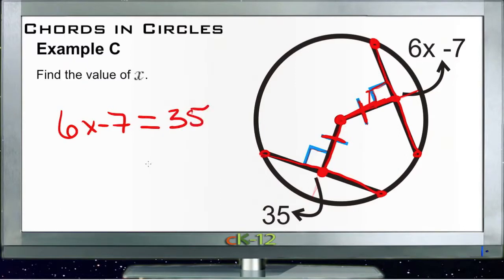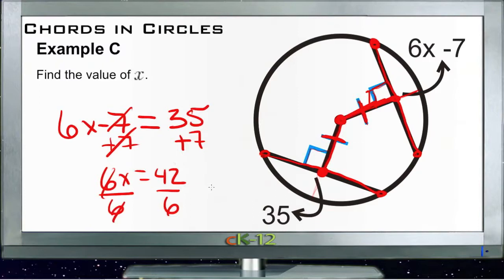Then we just need to solve for X. So we'll add 7 to both sides. This will go away. We'll get 6X equals 42. And then divide both sides by 6. And 42 divided by 6 is 7. So that tells us that X equals 7. And we're done.